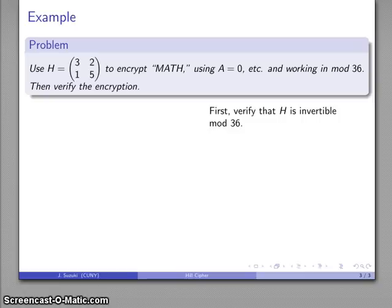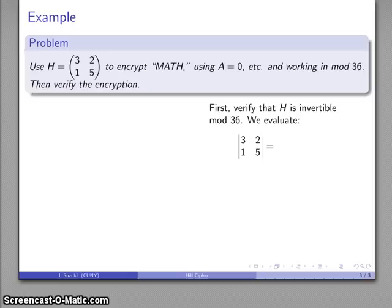All right, so let's first of all determine that H is actually invertible, because the Hill cipher won't work if we don't have an invertible matrix. So we want to find the determinant, which is going to be 13, which is, conveniently enough, relatively prime to our modulus, so we know there is an inverse.